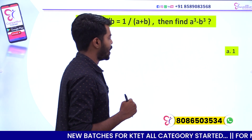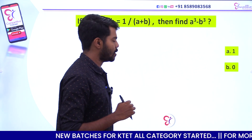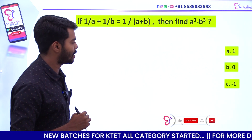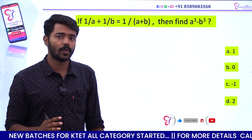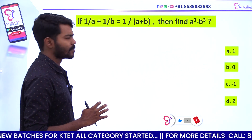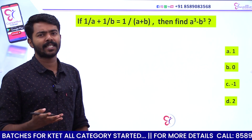Option A: 1, option B: 0, option C: minus 1, option D: 2.